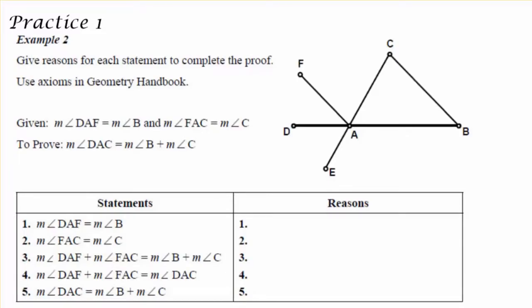As you can see, we have a diagram with given information. I'm given that angle DAF is equal to angle B, and that angle FAC is equal to angle C. And I need to prove that angle DAC is equal to B plus C.